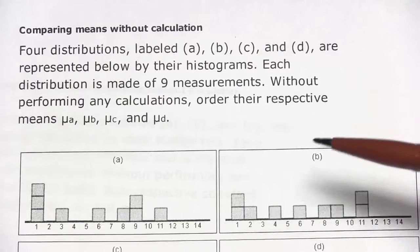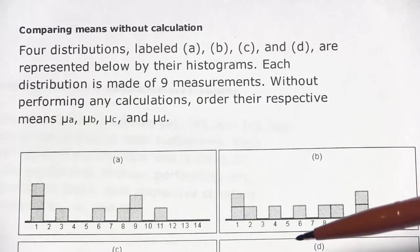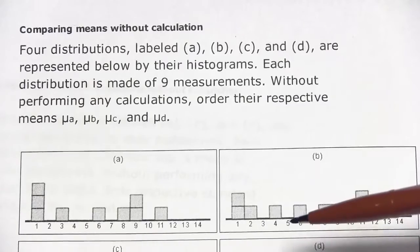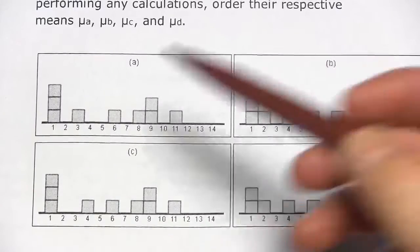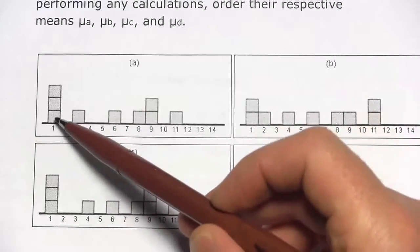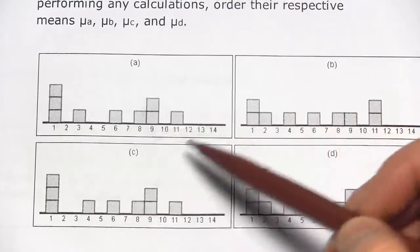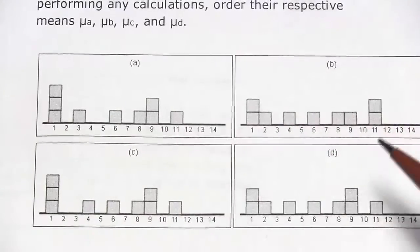In this problem we're being asked to compare the means of several distributions without doing any calculation. We have these diagrams of the distributions. This diagram here would mean that there were three ones, one three, one six and eight, two nines, etc.